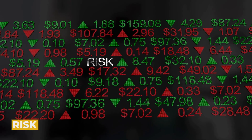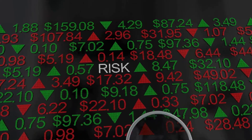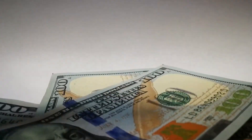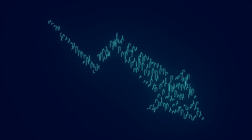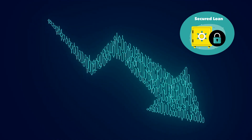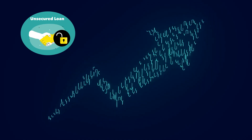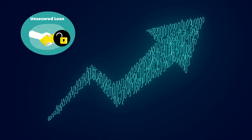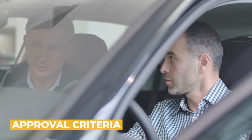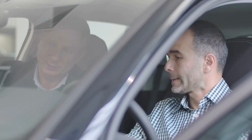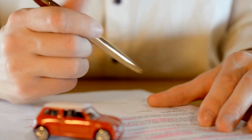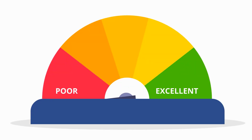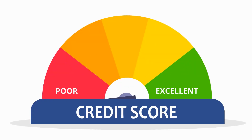Key Differences. Risk: Secured loans involve less risk for lenders, as they can recoup their losses by seizing the collateral. Unsecured loans are riskier for lenders, making them more selective in their approval process. Interest Rates: Secured loans generally have lower interest rates, while unsecured loans have higher rates due to the increased risk. Approval Criteria: Secured loans rely heavily on the value and condition of the collateral, whereas unsecured loans depend on your credit score and financial history.